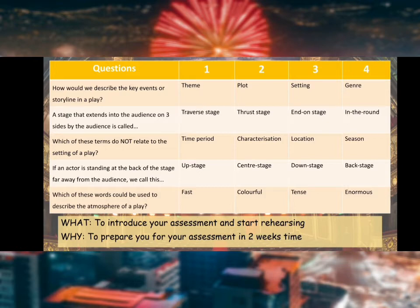Question 4: if an actor is standing at the back of the stage, far away from the audience, we call this upstage, which is number 1. And the final question: which of these words could be used to describe the atmosphere of a play? The answer is number 3, tense. Please write the correct answers next to the questions in your book.